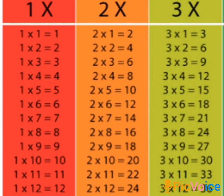1 1s are 1, 1 2s are 2, 1 3s are 3, 1 4s are 4, 1 5s are 5, 1 6s are 6, 1 7s are 7, 1 8s are 8, 1 9s are 9, 1 10s are 10, 1 11s are 11, 1 12s are 12. Then table of 2.